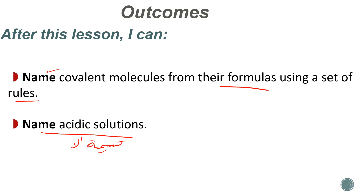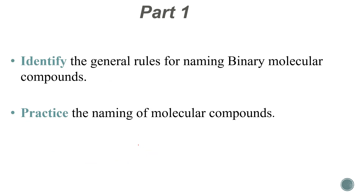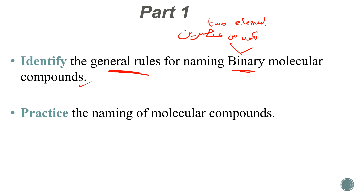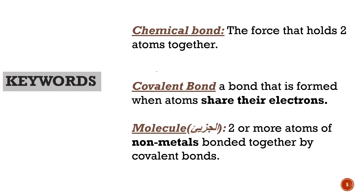Naming acids — which are a type of covalent compound — we will see in Part 2. So in Part 1, we are going to learn the rules for naming binary molecular compounds. Binary means made of two elements — not two atoms, but two elements. And then we'll do some practice. Remember: when we say 'molecule,' we mean covalent.